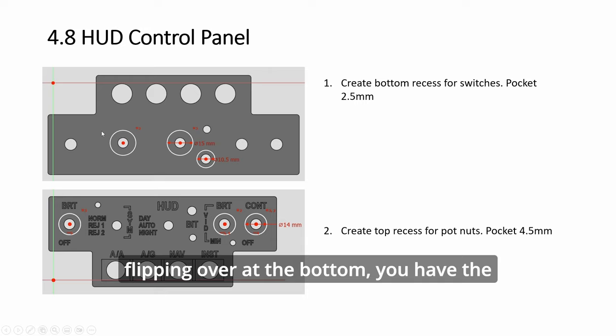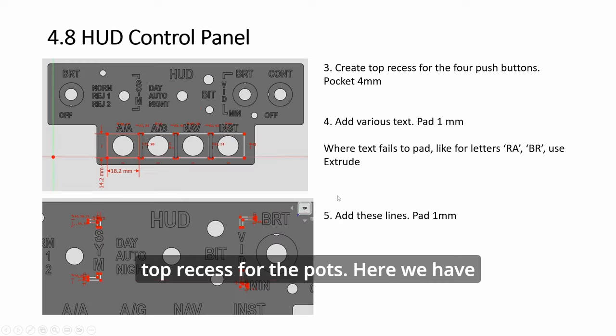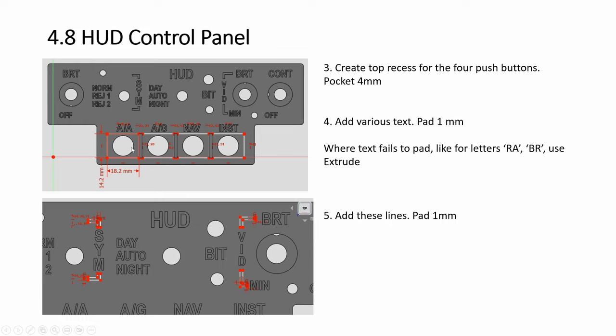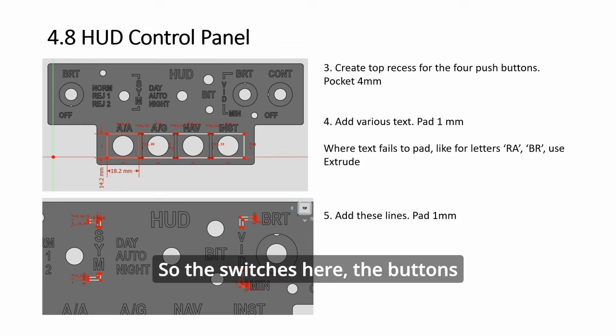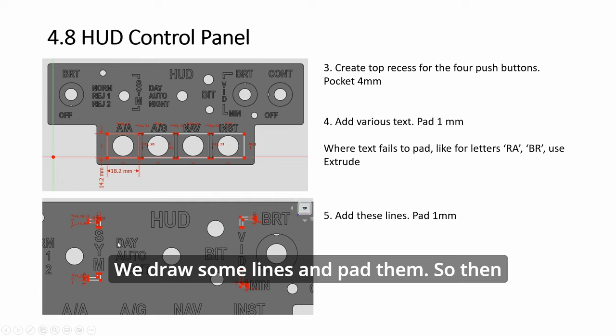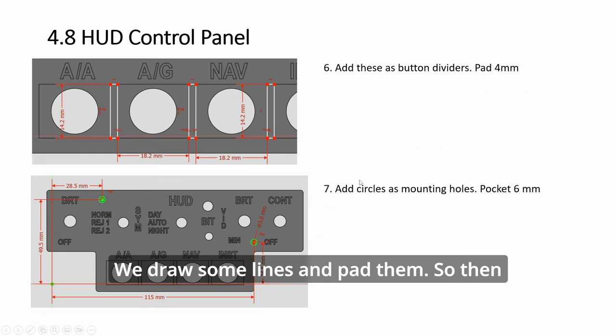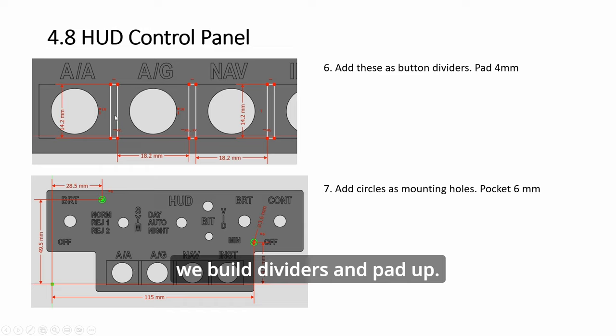So flipping over at the bottom, you have the bottom recess for the two toggles and this is a push button. And here we have top recess for the parts. Here we have rectangular recesses at the top. And so the switches here, the buttons actually sit slightly below the panel. Okay, and we draw some lines and pad them.